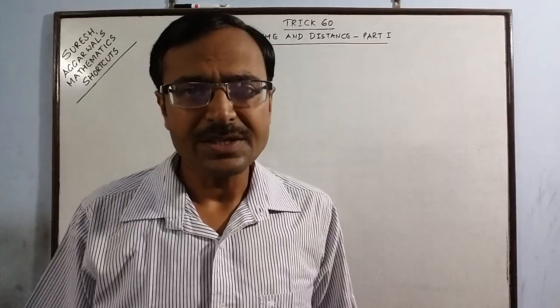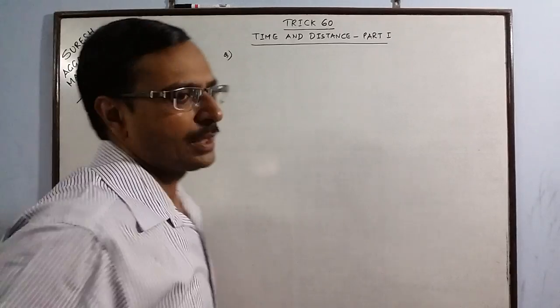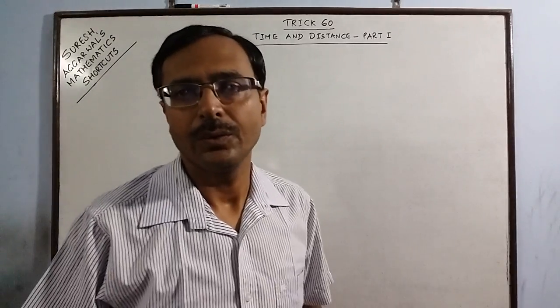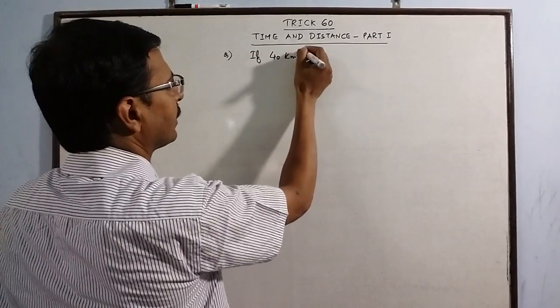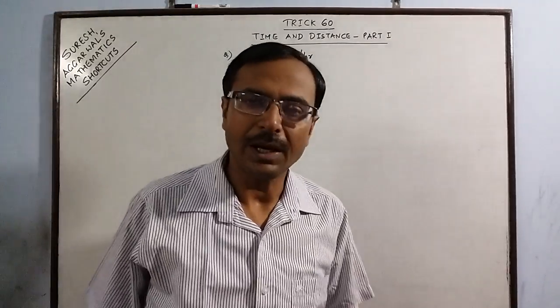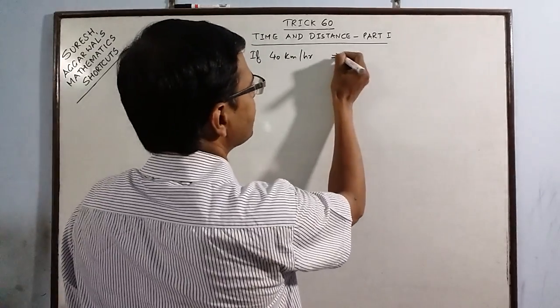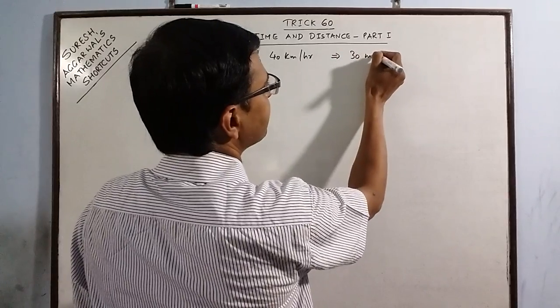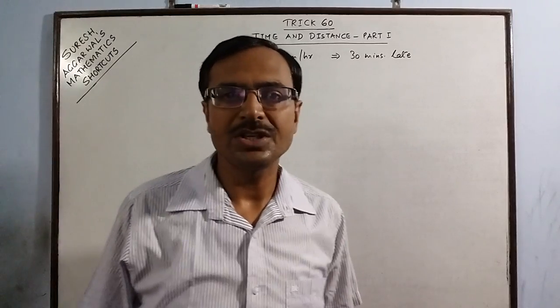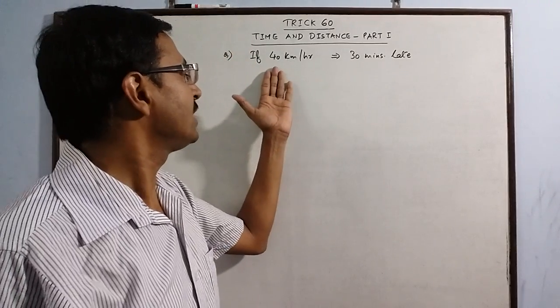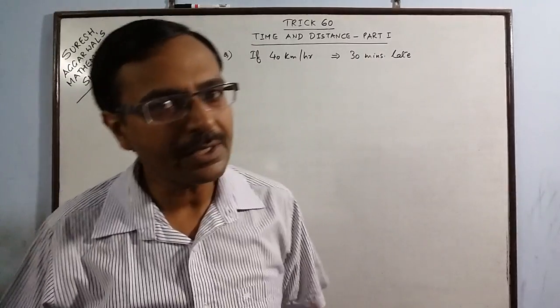Let us take one example. Suppose there is a car which is traveling at a speed of 40 km per hour. Now if the speed of the car is 40 km per hour, then it reaches its destination 30 minutes late. Another condition is given: if the speed is increased to 60 km per hour,